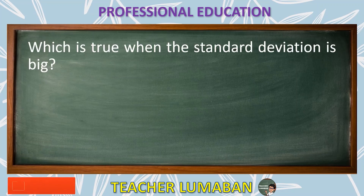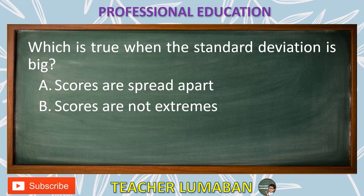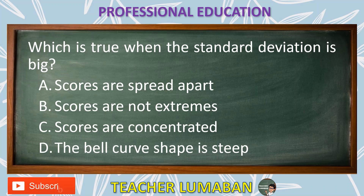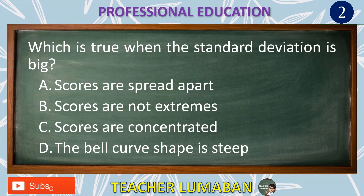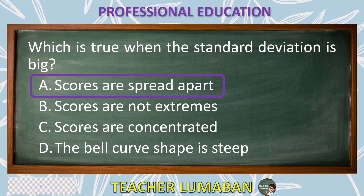Which is true when the standard deviation is big? Letter A: Scores are spread apart. Letter B: Scores are not extremes. Letter C: Scores are concentrated. Letter D: The bell curve shape is steep. The correct answer is Letter A, scores are spread apart. When the standard deviation is big, the scores are spread apart.